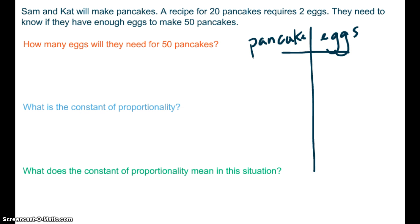Okay, so if you have set up your table, it should look something like this. You have pancakes to eggs. This is a rate. We have a recipe calls for 20 pancakes, calls for 2 eggs. And they need to know the number of eggs, so I'm going to put X number of eggs right here, for 50 pancakes.